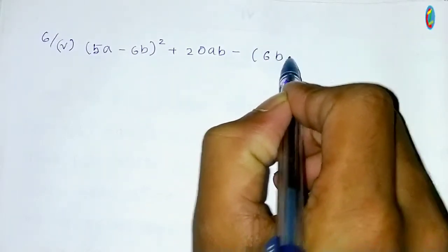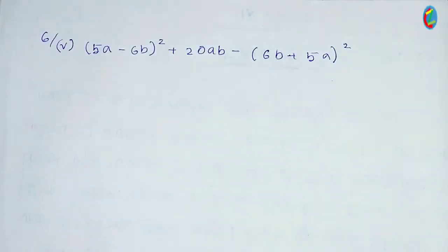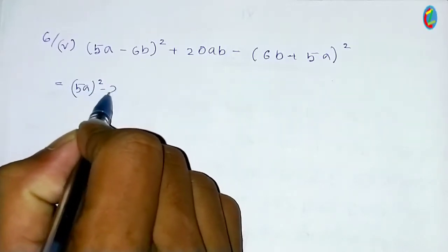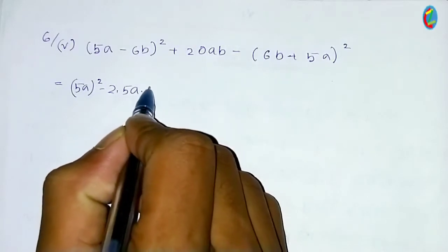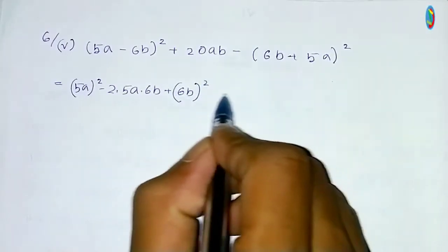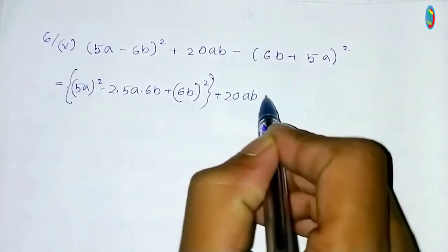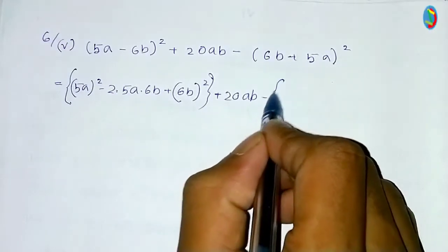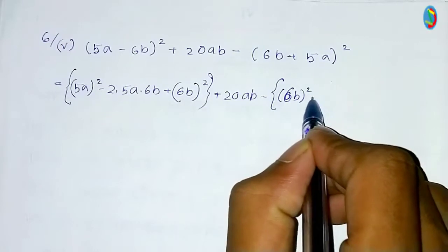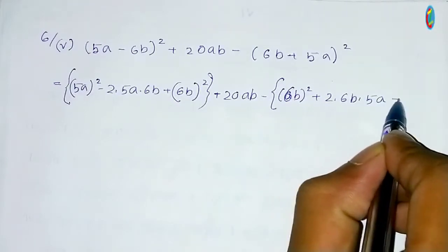This is (5a minus 6b) whole square plus 20ab minus 6b plus 5a whole square. This is 5a whole square minus 5a whole square plus 6b whole square.